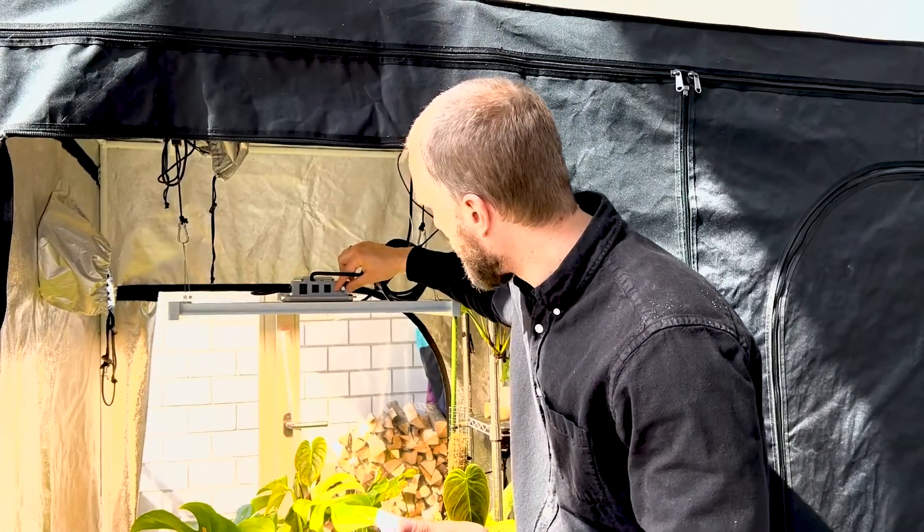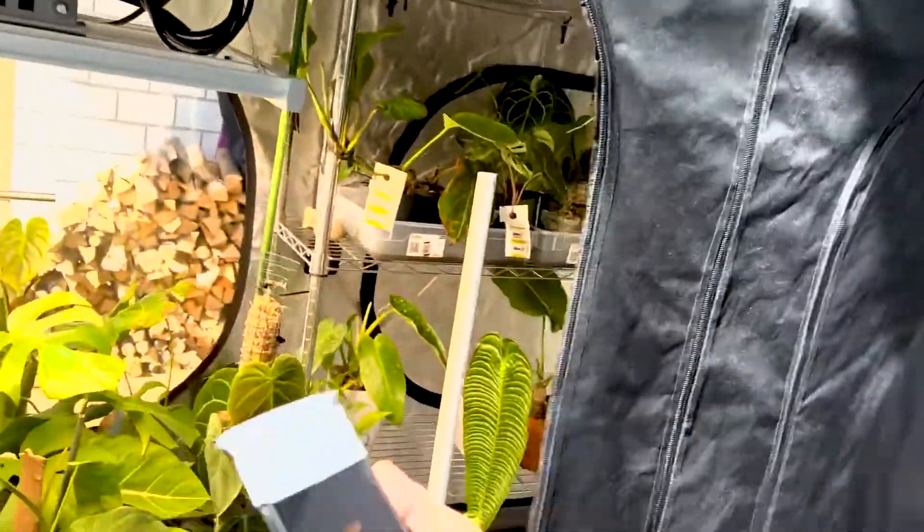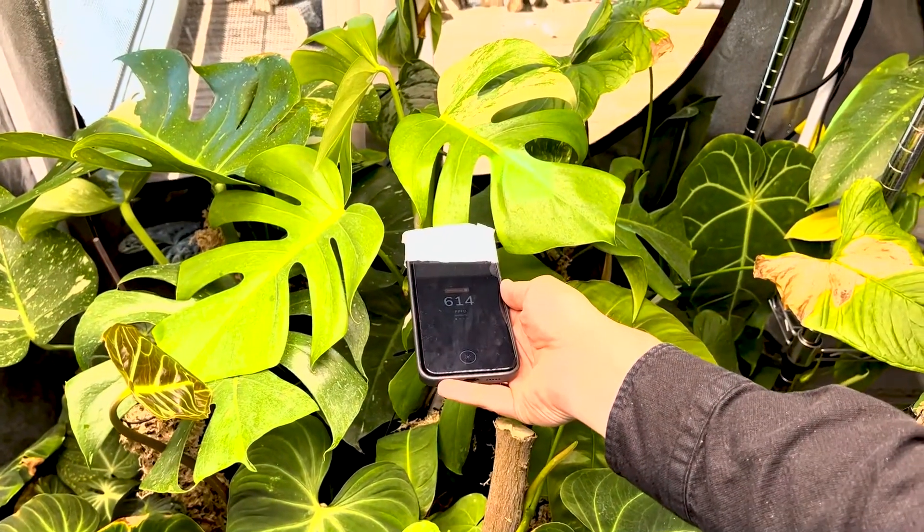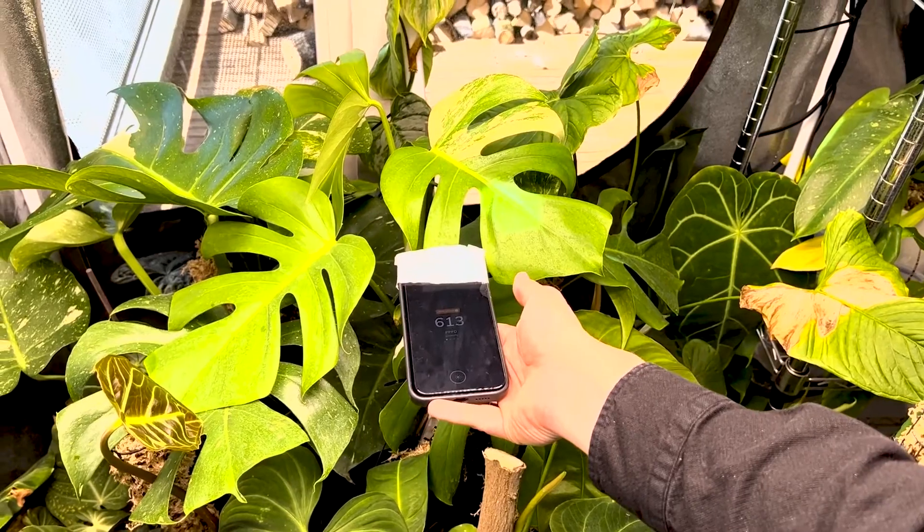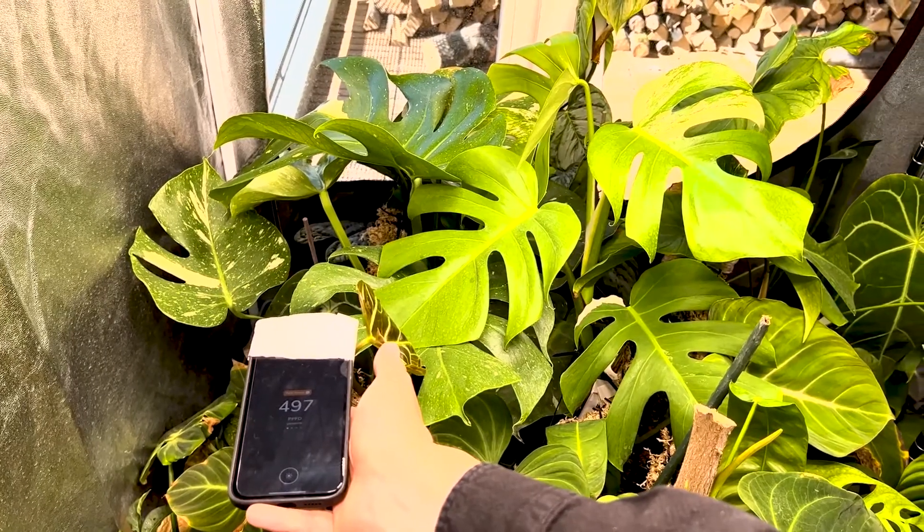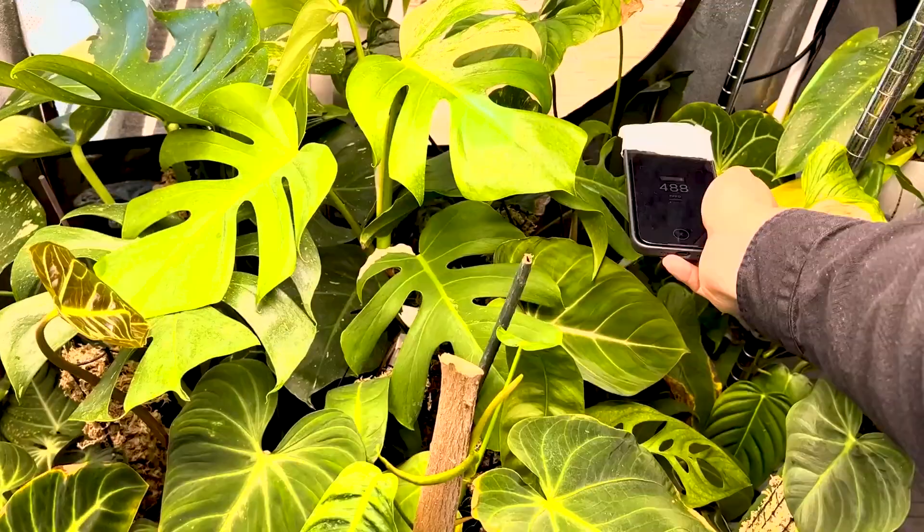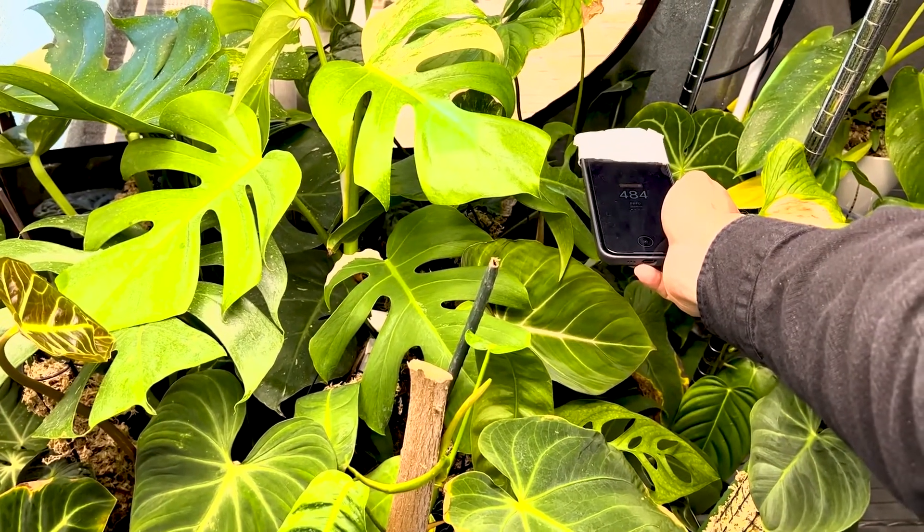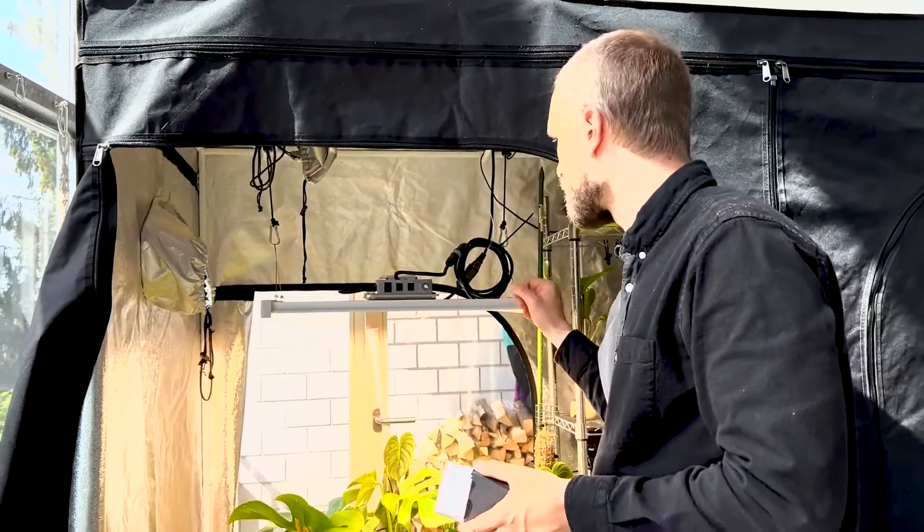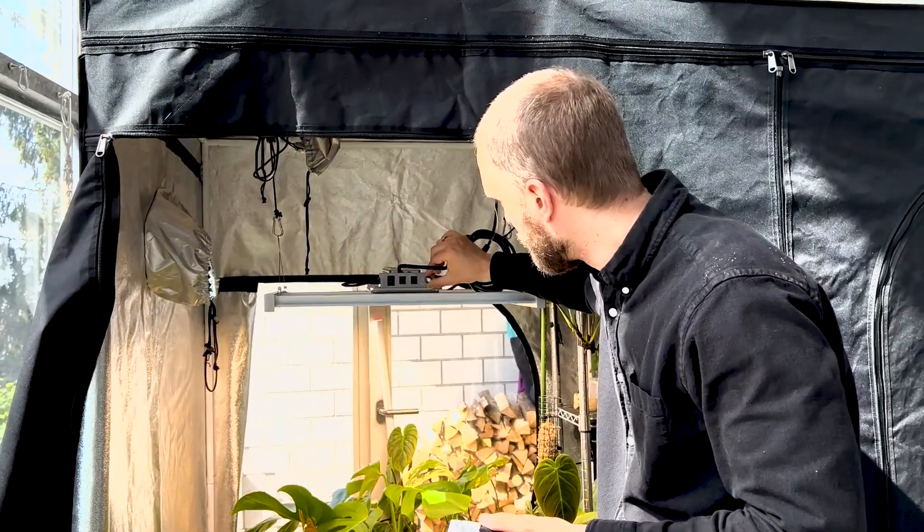So I set it on to max and now we're going to measure the PPFD values again. So at the center I'm getting 610-ish PPFD. At the edges it measures still like 490 to 500 PPFD. This just shows you that this grow light doesn't fall off sharply as I've just mentioned and the PPFD values are really high. It's way too much for my monstera and philodendron plants. That's why I put it back on 25% because around 100 PPFD is just all I need.